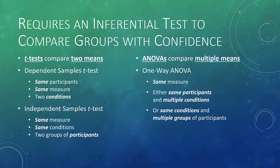In order to compare groups with confidence, we're going to use two different types of tests in this class. T-tests compare two means, and we'll look at two varieties. One is the dependent samples t-test, in which we give the same participants the exact same measure under two different conditions. We'll also look at the independent samples t-test, in which we give the same measure to two different groups of participants.